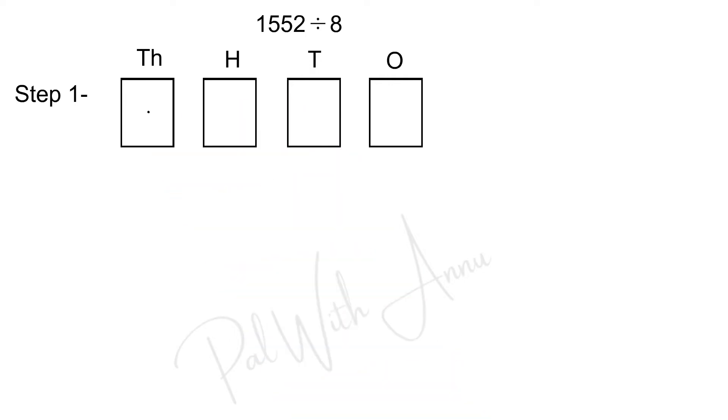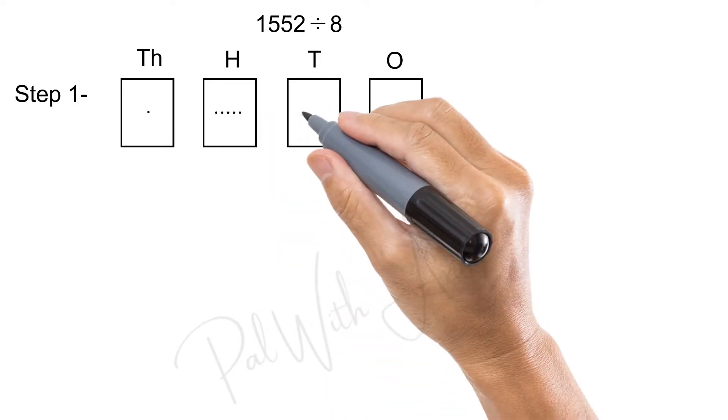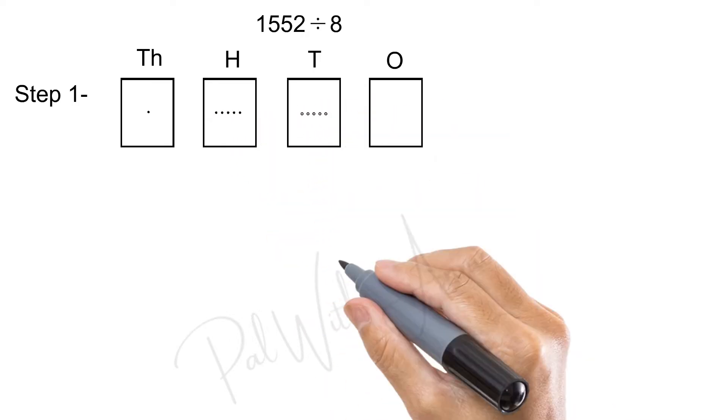In 100's place, the digit is 5. So, I put 5 dots. And in 10's place, 5 dots and 1's place, 2 dots.